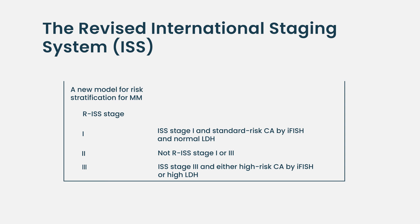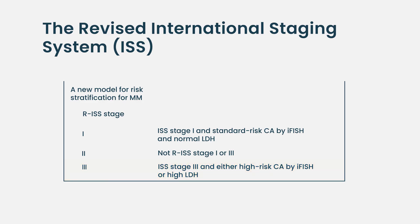On the other hand, revised ISS stage three patients would have the old ISS stage three plus either a high LDH level — each institution has its own upper limit of normal, and if it is above that limit it is considered high LDH, which would place the patient in revised ISS stage three — or patients have one of those three chromosomal abnormalities on FISH studies: deletion 17p, translocation 4;14, or translocation 14;16. Those who do not fall into revised ISS stage one or stage three fall into revised ISS stage two.